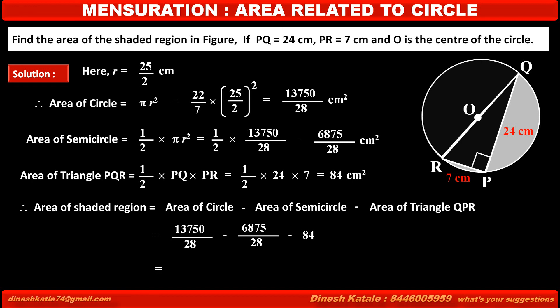Subtracting the above values, we get 4523/28, which is equal to 161.54 cm². This is the required area of the shaded region.